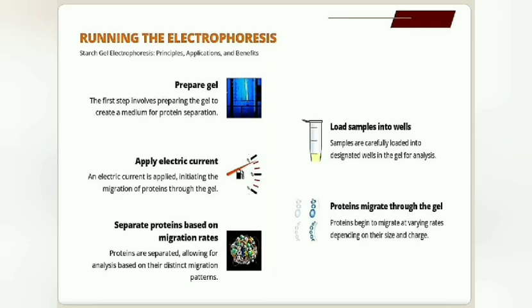Procedure: The gel system is prepared in a vertical column or in a slab. It consists of three types of separate regions: the upper sample gel, the middle spacer gel, and the lower separating gel. Sample and spacer gels are less concentrated, so they have a larger pore size.